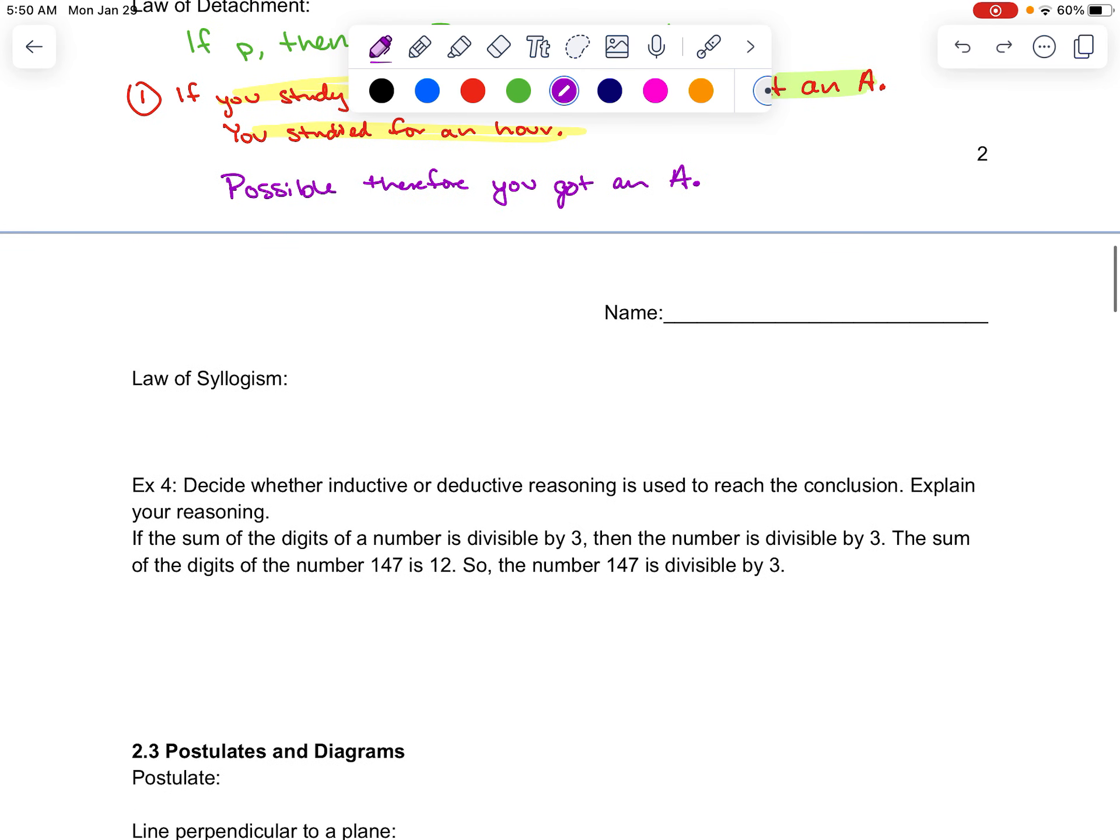Law of syllogism. Similar setup. There's two if statements though. So, if P, then Q. If Q, then R. Therefore, if P, then R. Again, notice you have to have that set up.